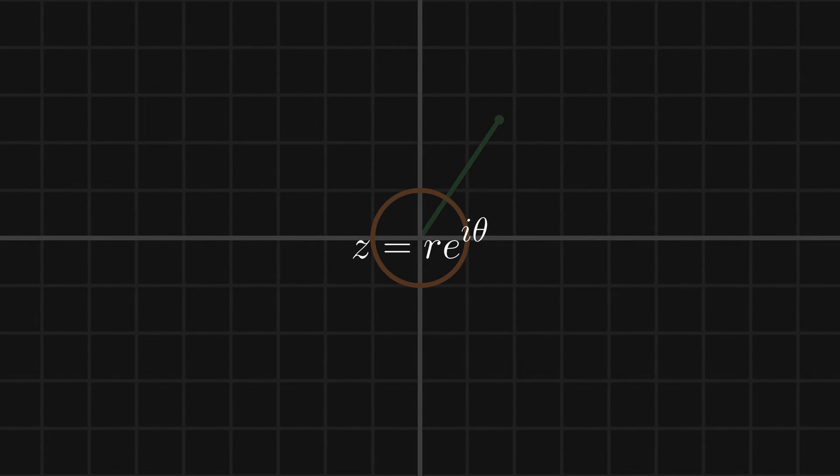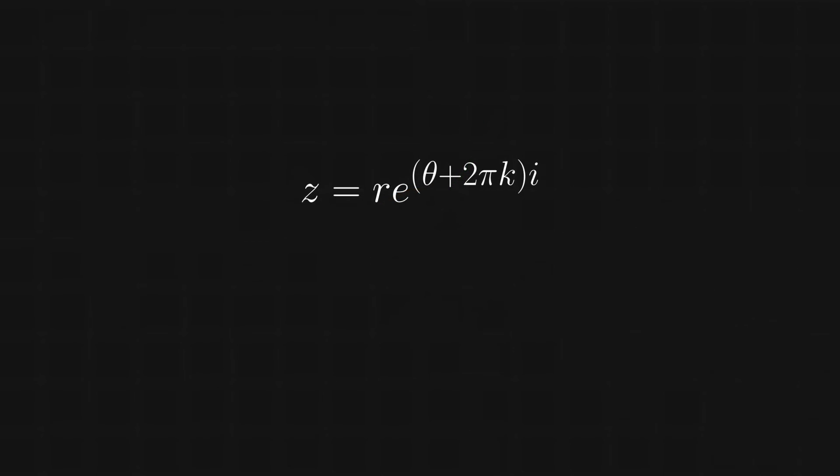If we go back to how we define z, we let it to be some number r e to the i theta. But what if we want to solve the general problem? We need to let z equal r e to the theta plus 2 pi k i, where k is some integer. If we do the same algebra as before, we're left with natural log of z equals natural log of r plus theta plus 2 pi k i. This isn't good since the same number z could get us a different natural log depending on what we set k equal to.